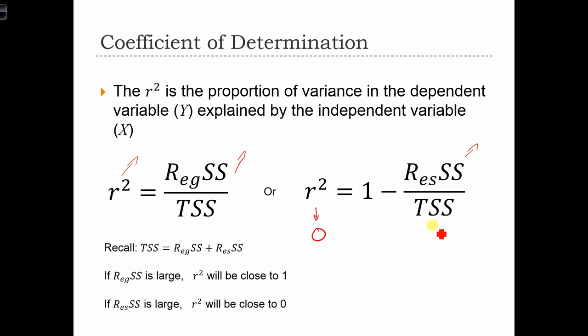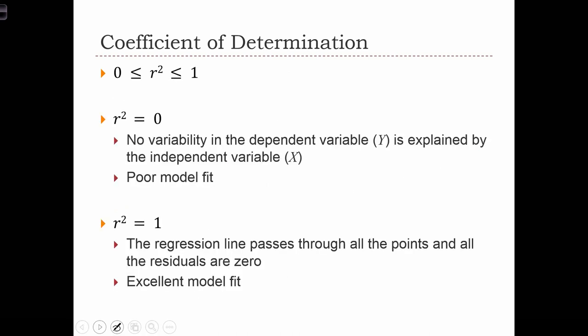In this case, if the regression sum of squares is small, then the r-squared will go to 0. And if the regression sum of squares is large, then the r-squared goes to 1. So the coefficient of determination is always going to be a fraction, a percentage between 0 and 1.